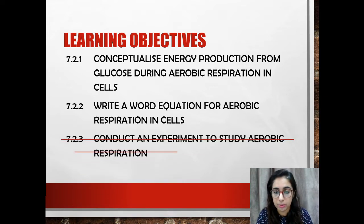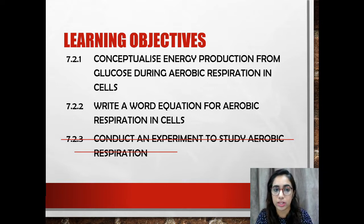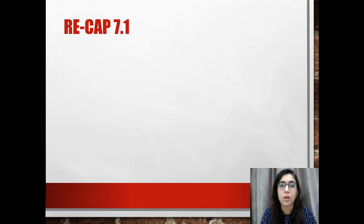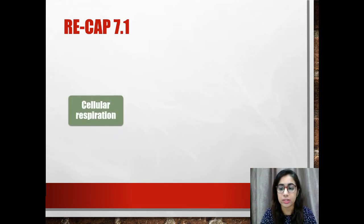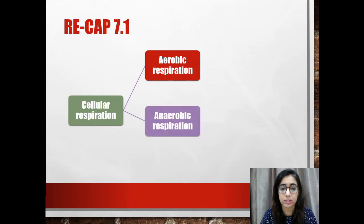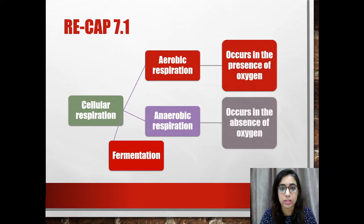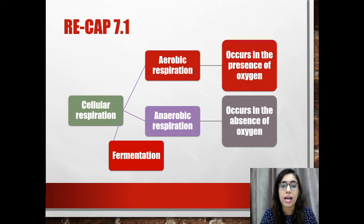Learning objective 7.2.3 we are not going to do today because we can't conduct any experiment, but you should be able to achieve 7.2.1 and 7.2.2 from this lesson. Before we begin, let's recap our previous lesson. In 7.1 we learned that cellular respiration is divided into three types: aerobic respiration, anaerobic respiration, and fermentation. Aerobic respiration occurs in the presence of oxygen and anaerobic respiration occurs in the absence of oxygen.